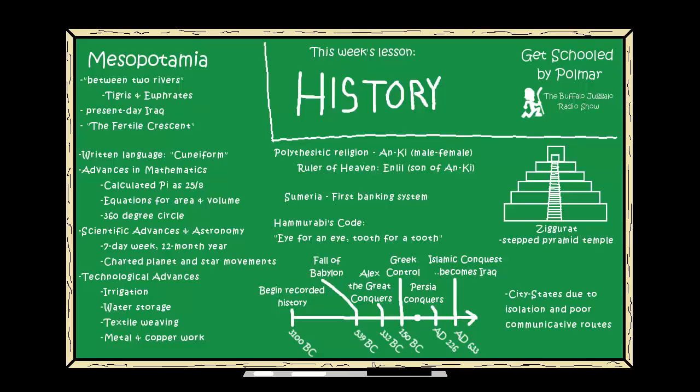About 150 years later it was conquered by Alexander the Great. After Alexander's death it basically became part of the Greek Empire until 150 BC, when the Roman Empire took control until 226 AD, when it fell to the Persian Empire. That lasted until about the 7th century and the Arab Islamic conquest, where the area became Iraq. At the time, Mesopotamia covered Iraq, Kuwait, and parts of Syria and Turkey.